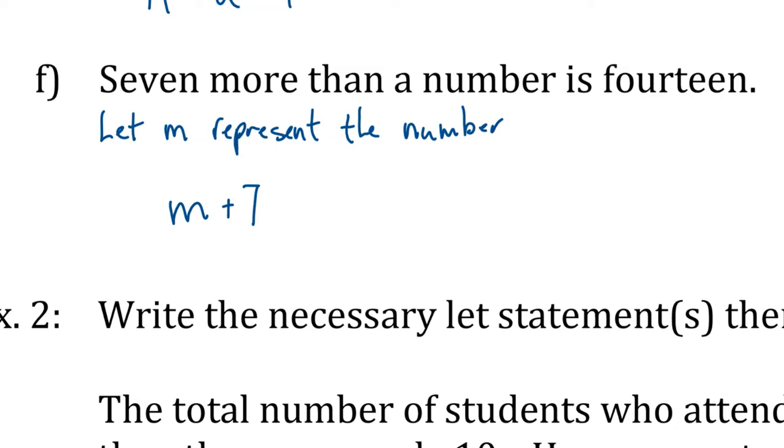7 more than M is M plus 7. Whatever M is, if M is 3, I add 7, I get 10. If M is 20, I add 7, I get 27, right? This is how it works. We don't know what M is. Then when it says is 14, we can complete that with equals 14.